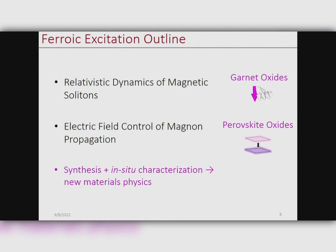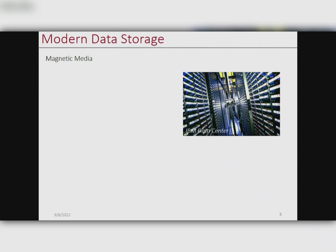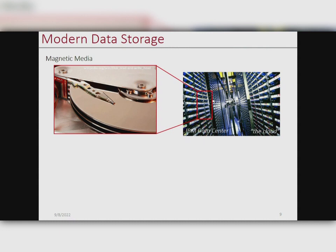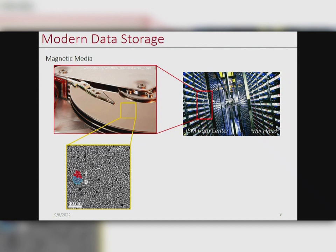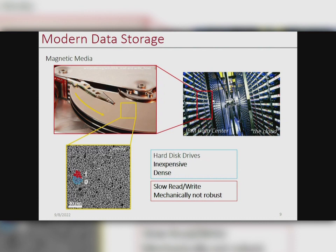I'll first start with the relativistic dynamics. I'm an engineer by training, so I always think to applications, and what was nicely portrayed earlier by Peter was Racetrack Memory. I'll remind you that most data on Earth is actually still stored magnetically, either through hard disk drive or tape, particularly in the cloud. We essentially use the magnetic state of one or a few grains to represent one or zero bits of information. While this is dirt cheap and incredibly dense, there are dramatic disadvantages in terms of robustness and speed.